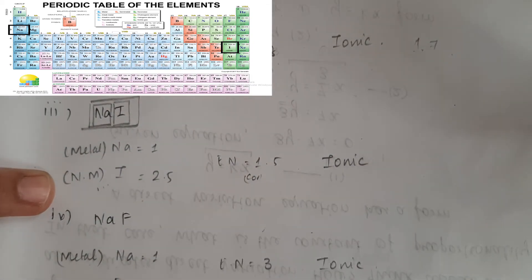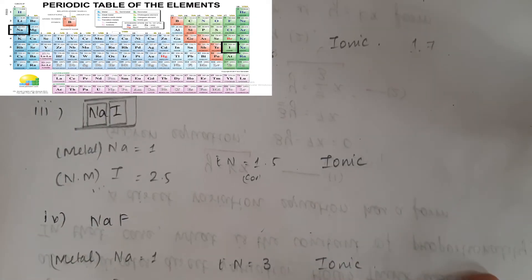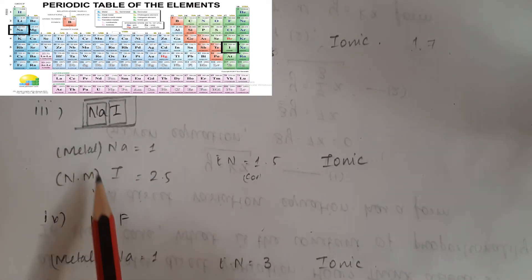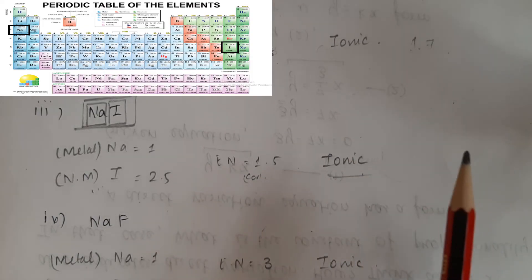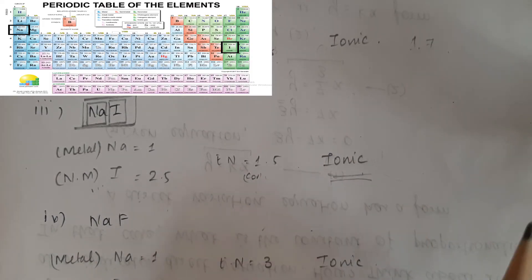If you look at the electronegativity value, or if you look at whether it's metal or non-metal, then you decide the bond. If the electronegativity difference is greater than 1.7, the bond is ionic. This is a single molecule, and the answer is ionic.